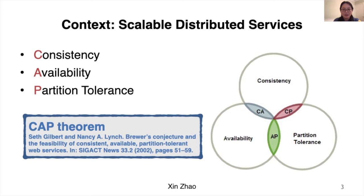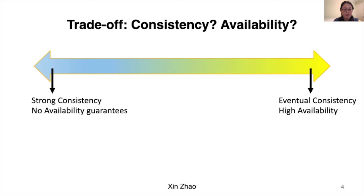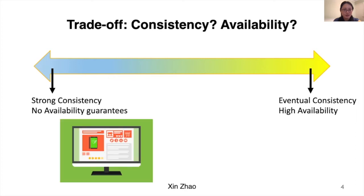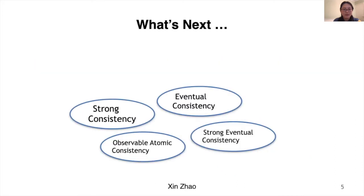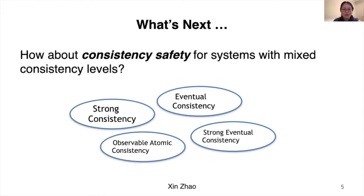In the presence of network partition, we need to trade off between availability and consistency. For bank transfer, achieving strong consistency for each transaction is required. But for chat services, high availability is more important. It is clear that there is no perfect consistency model that will suit every application. Because of that, distributed systems commonly provide multiple consistency levels. The question is: how about consistency safety for systems with mixed consistency levels?